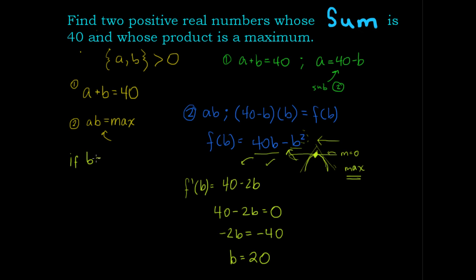Well, if b is equal to 20, then a is equal to 20. If b was 20, subtract 20 from each side, a is 20. So the two positive real numbers are a equals 20 and b equals 20.